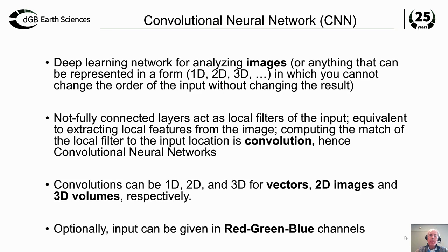The trick in a convolutional neural network is that in the convolutional layer you're not connecting all nodes to all nodes in the next layer, but only to a subset. By doing that, the connections act as a kind of convolutional filter. Basically you're decomposing the image into a set of filtered images that are passed on to the next layer. The convolutional layer also takes over the function of extracting attributes from the data. In seismic analysis we give the CNN a cubelet around the analysis point, and it extracts the relevant features in the convolutional layer.